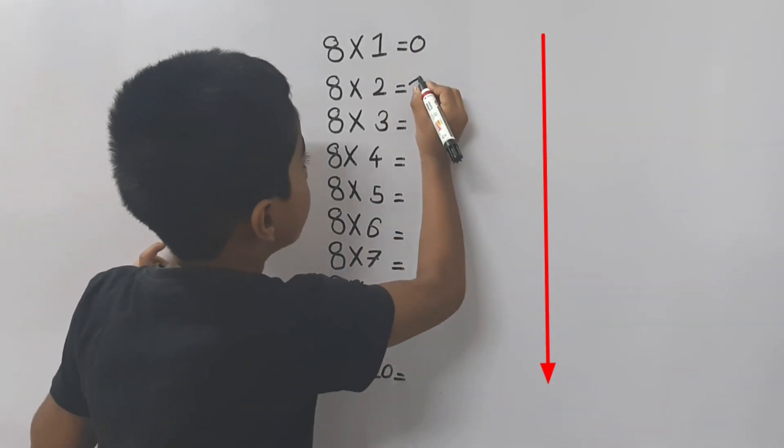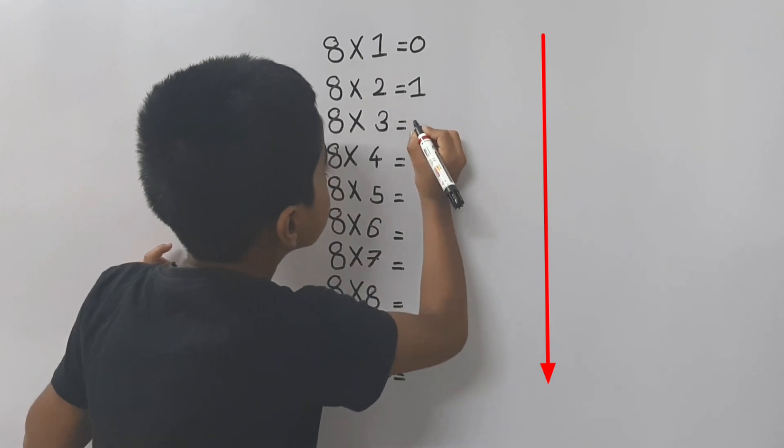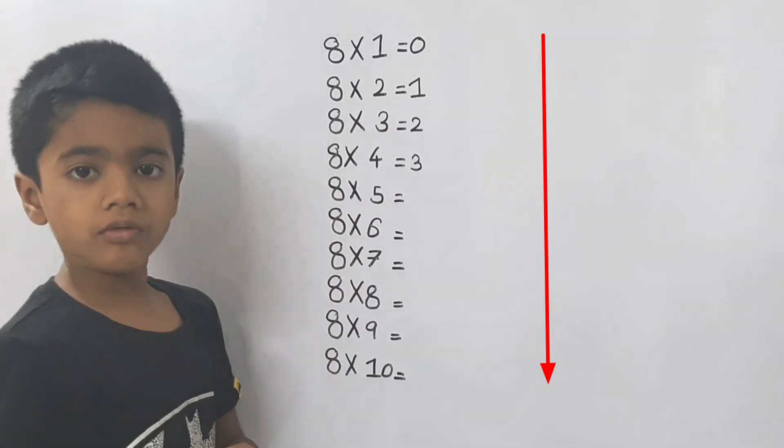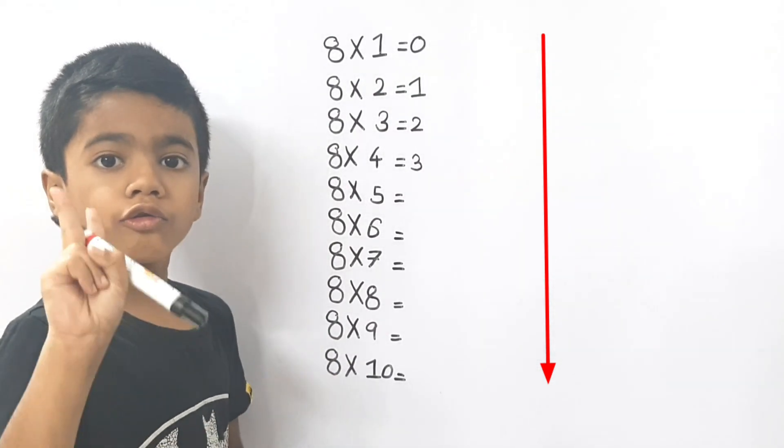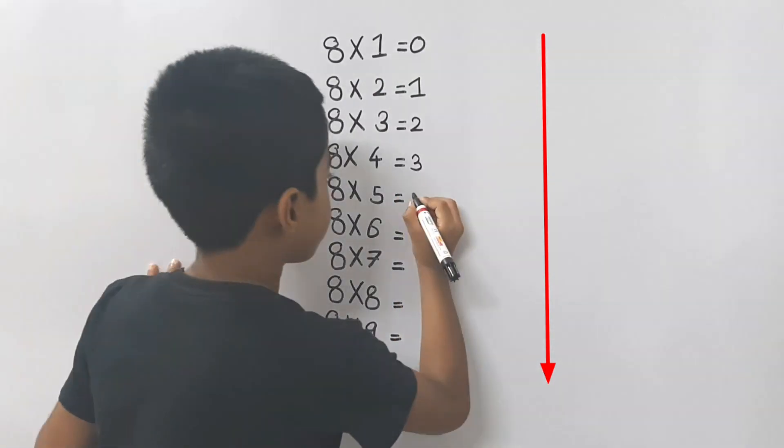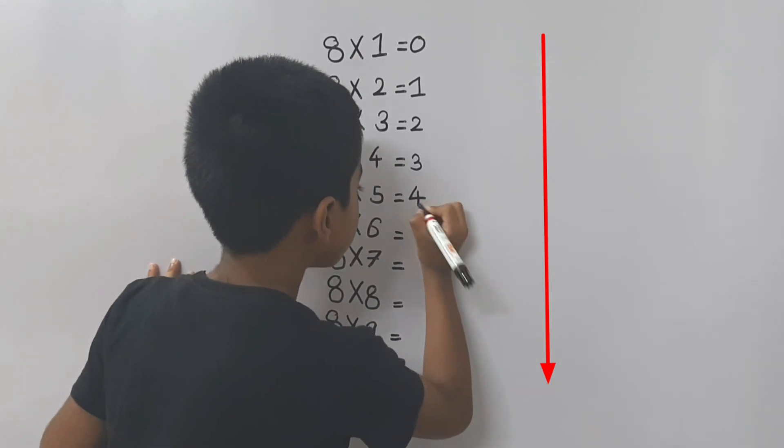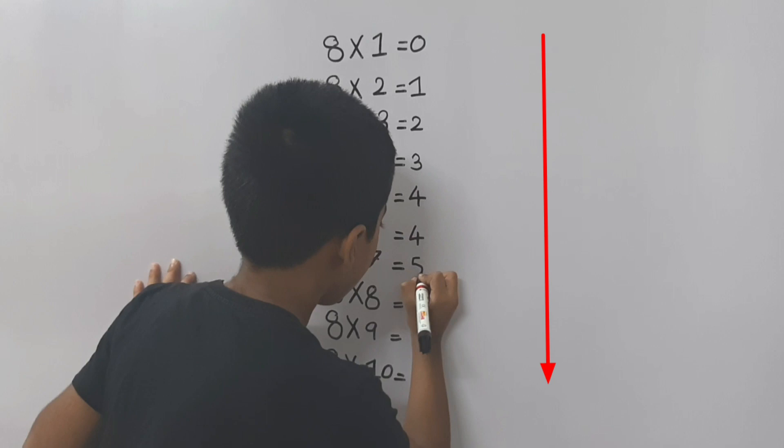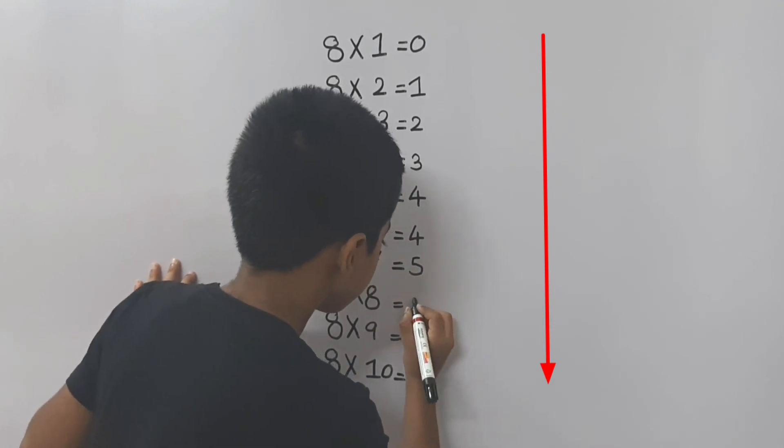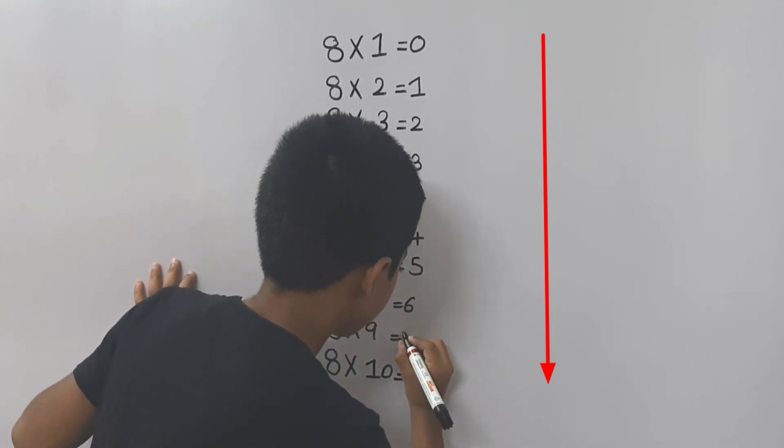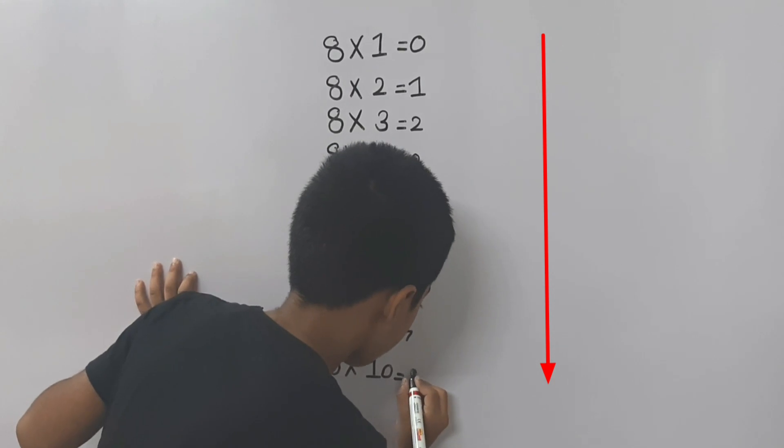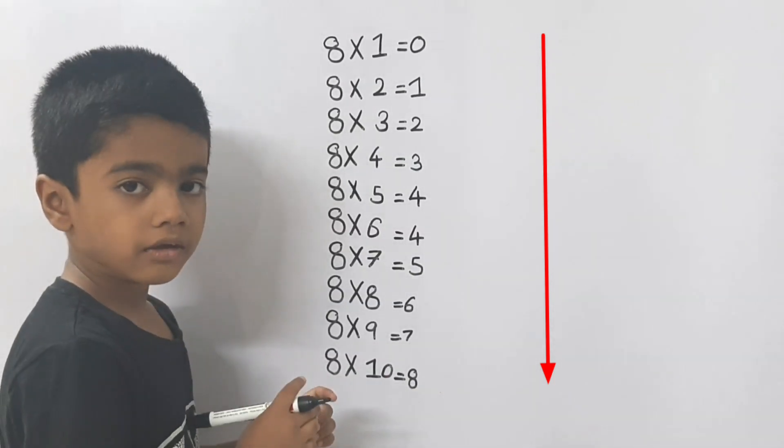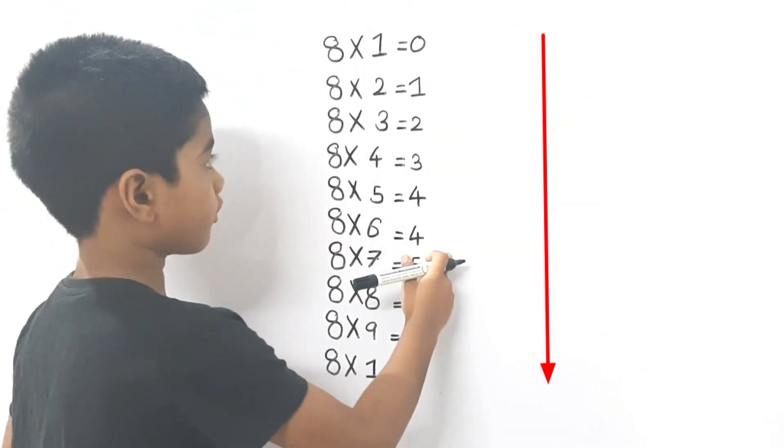1, 2, 3. Please note, write 4 two times. 4, 4, 5, 6, 7, 8. Now let's write 8 to 0 like this.